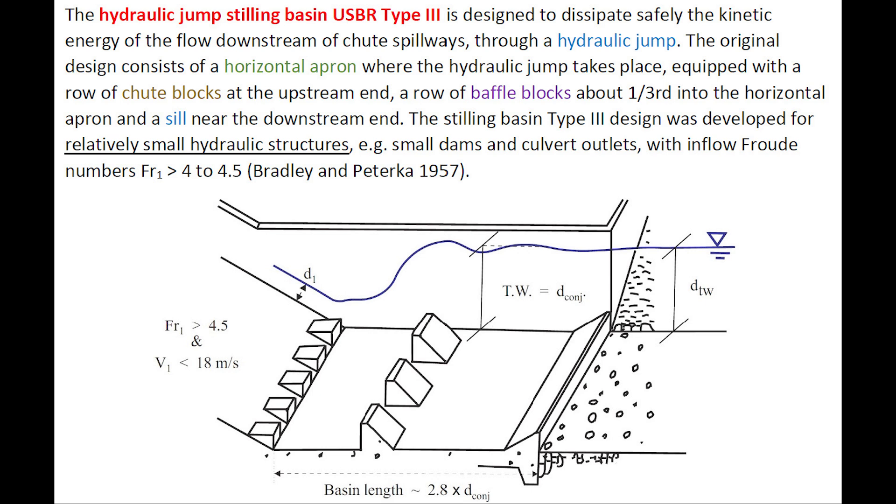and a sill near the downstream end. The Stilling Basin Type III was developed for relatively small hydraulic structures, small dams, culvert outlets, with inflow Froude number greater than 4 to 4.5.